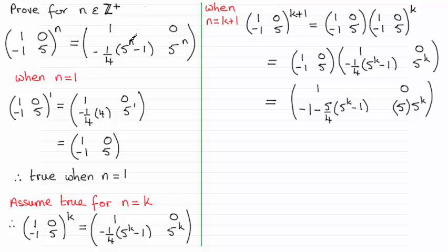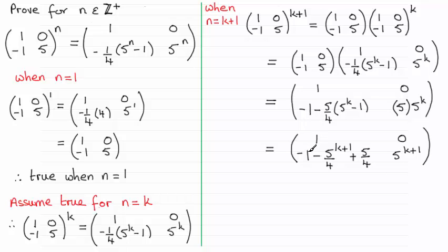Now I need to think about how I'm going to end up with something like the original formula only with k plus 1 wherever there's an n. I can see that 5 to the power 1 times 5 to the power k is going to be 5 to the power k plus 1. For the other element, if we expand the bracket we're going to have -1, then -5/4 times 5 to the power k — that'd be 5 to the power k plus 1 if we add the powers — and then we've just got plus 5/4 on the end. We then have 5/4 minus 1, which is just 1/4, and I can pull out a quarter.